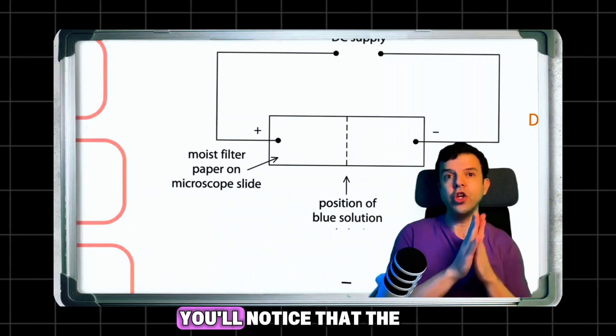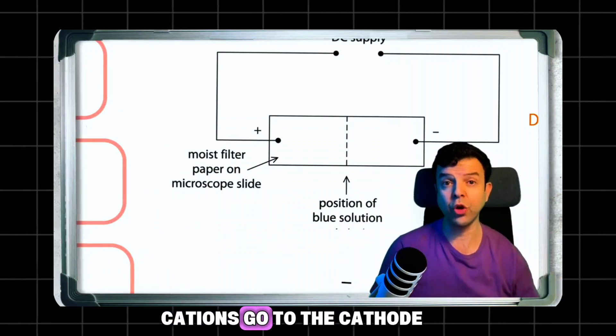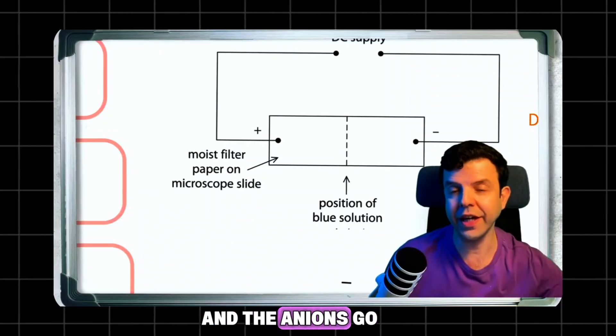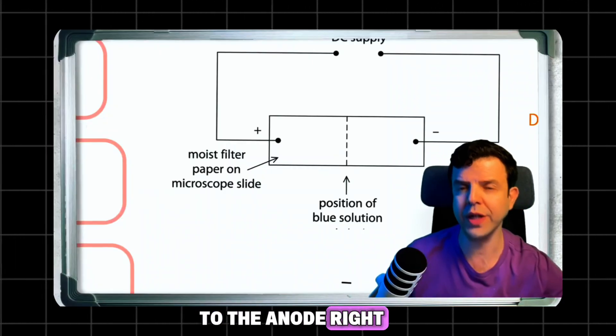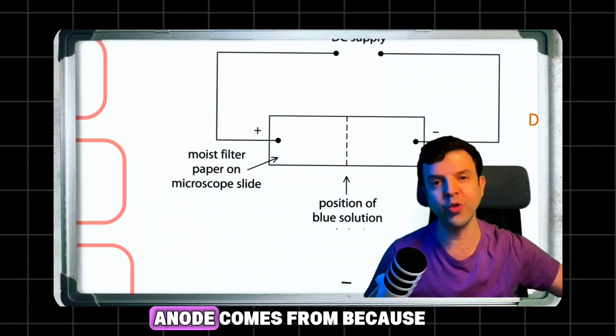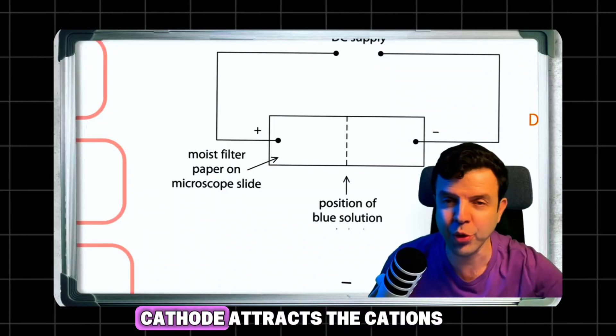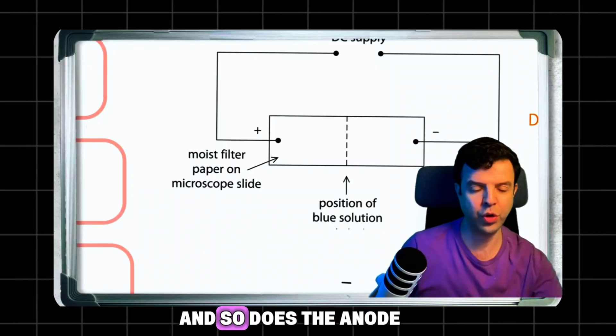and turn on the electricity, you'll notice that cations go to the cathode and anions go to the anode. That's where these words come from: cathode attracts cations and anode attracts anions.